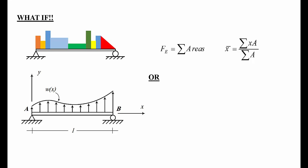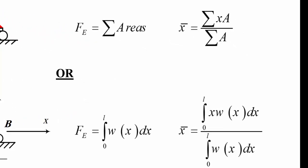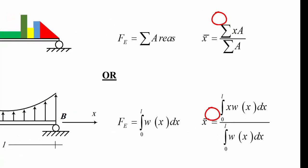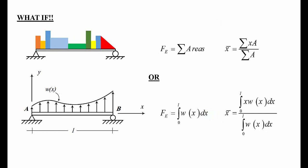Using integration, the equivalent force F_E is found by integrating the load function w(x) from 0 to L — because integration is essentially finding the area under a function. For the centroid, the same formula applies but with an x factor inside the integral: X̄ = ∫x·w(x)dx / ∫w(x)dx. Comparing the two equations, the only difference is that x factor in the numerator.